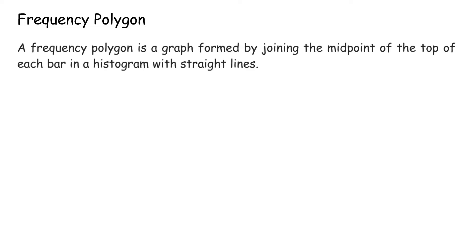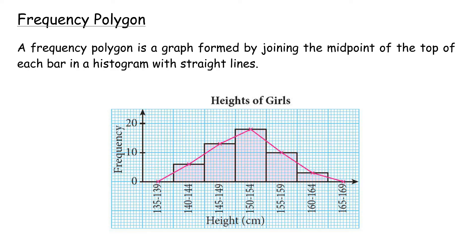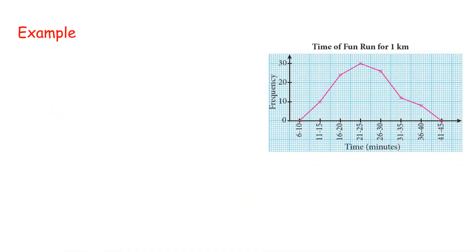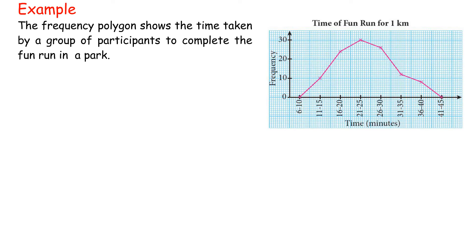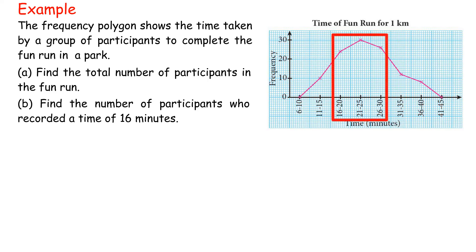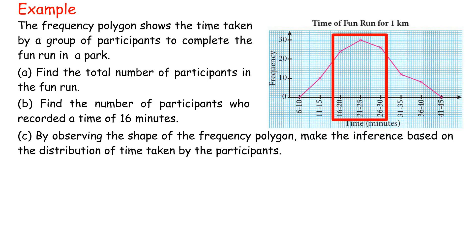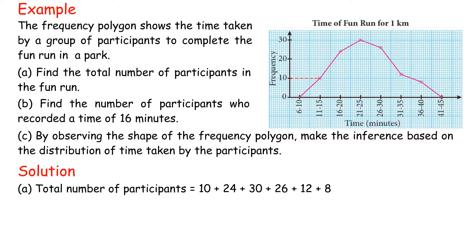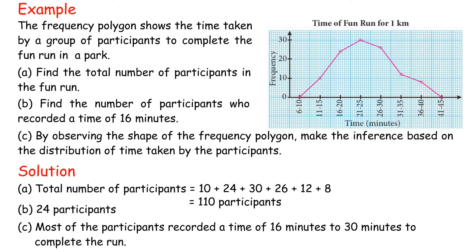Frequency Polygon: A frequency polygon is a graph formed by joining the midpoints of the top of each bar in a histogram with straight lines. Example: a frequency polygon shows the time taken by participants to complete a fun run. A. Total participants = 10 + 24 + 30 + 26 + 12 + 8 = 110. B. Participants who recorded a time of 16 minutes: 24. C. Inference: most participants recorded a time of 16 to 30 minutes to complete the run.